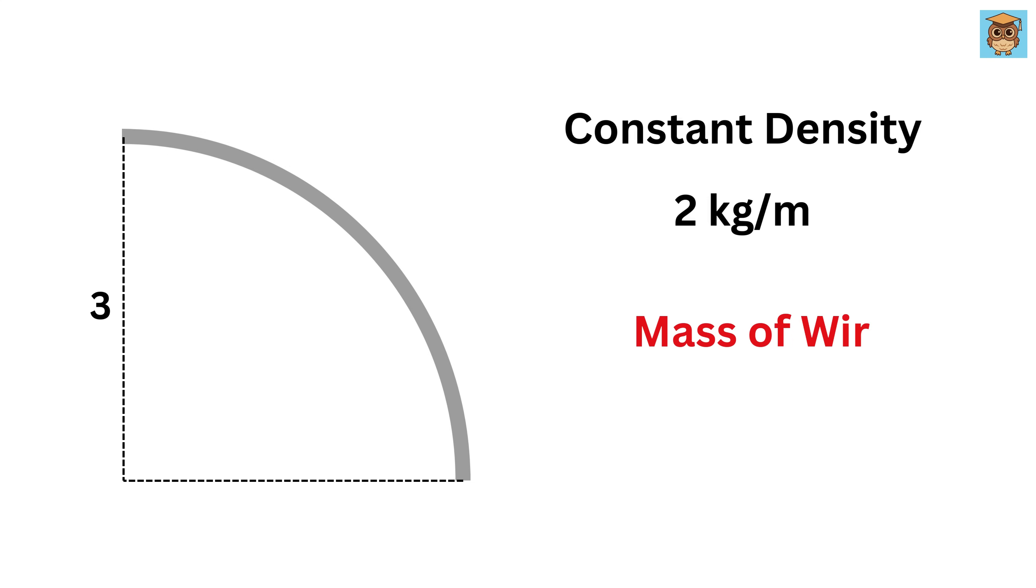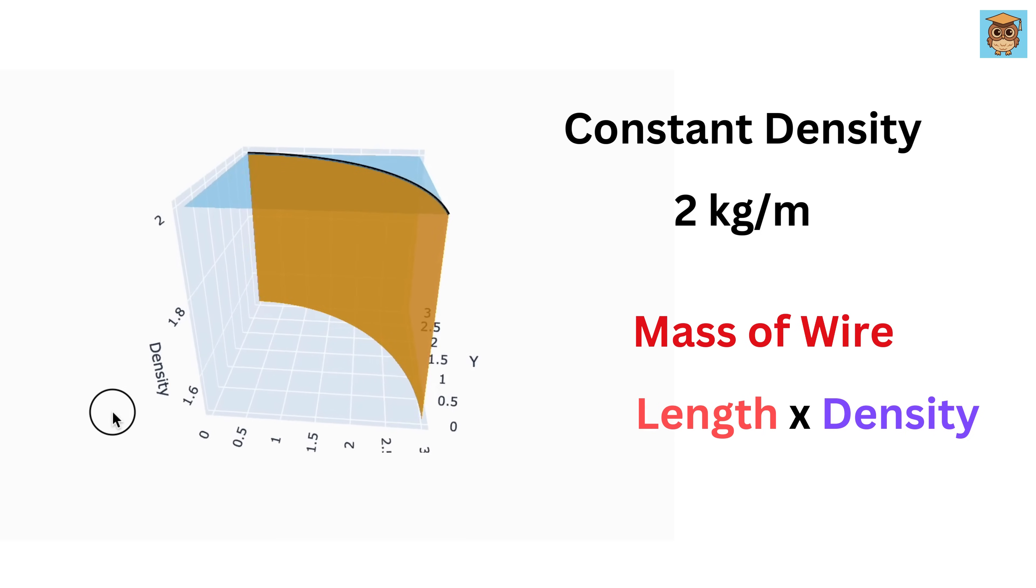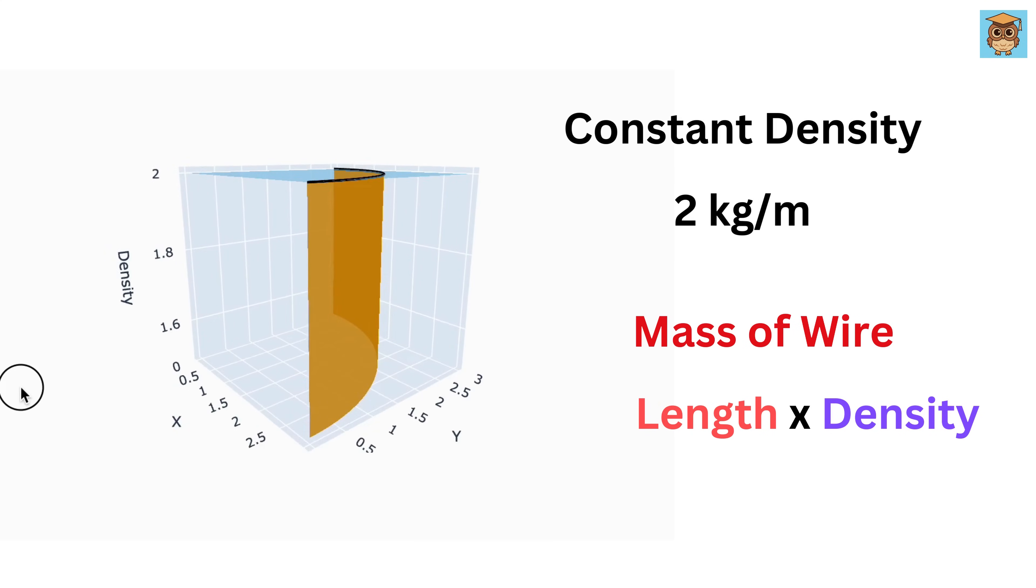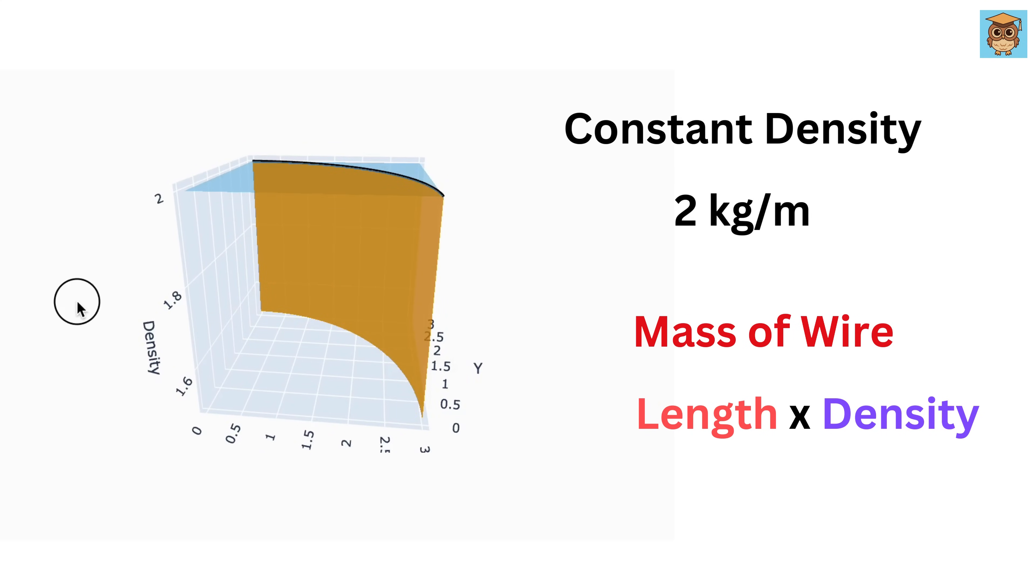In this case, calculating the total mass of the wire is easy. If we know the total length of the wire and its density, we just multiply them together. Mass equals density times length of the wire. Using this orange region, you can see how our mass distribution is spread along the curve. The orange ribbon visually represents how each small segment of the wire contributes to the total mass.